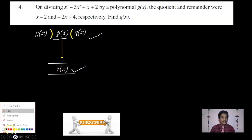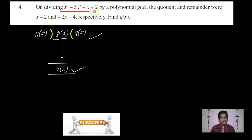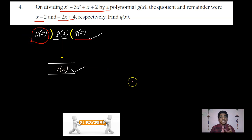Now for problem number four: we are given polynomial p(x) = x³ - 3x² + x + 2. The quotient and remainder are x - 2 and -2x + 4 respectively. We need to find g(x), the divisor. We are given p(x), the quotient Q(x) = x - 2, and the remainder R(x) = -2x + 4.